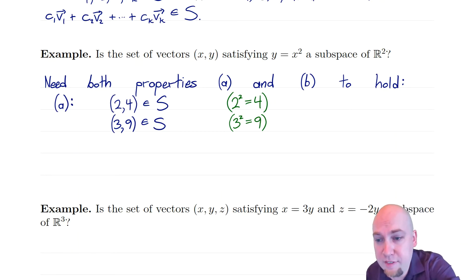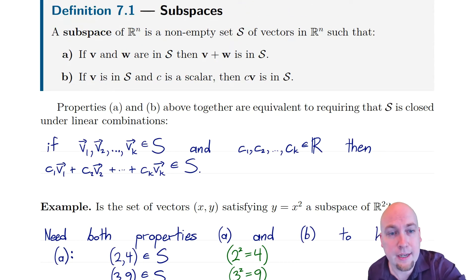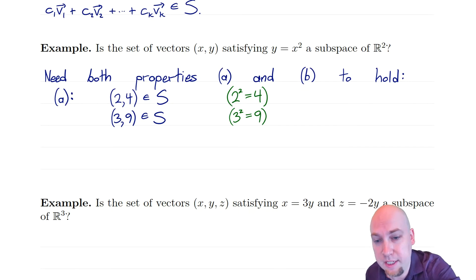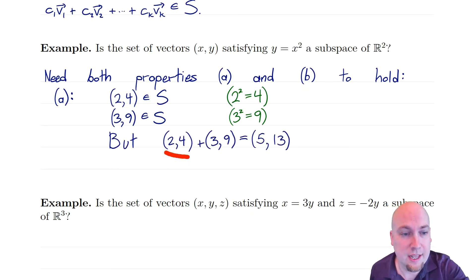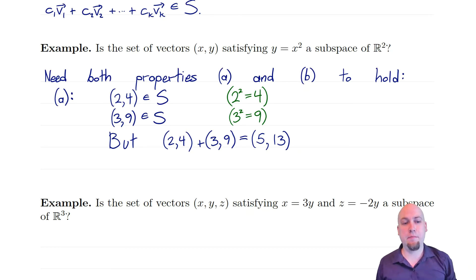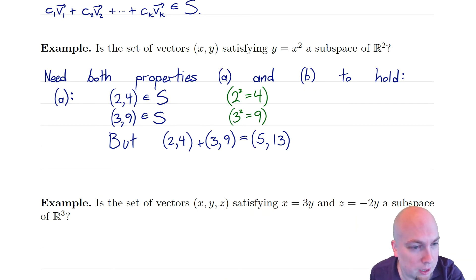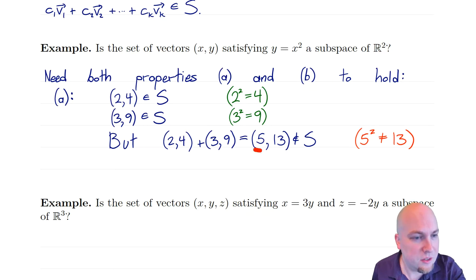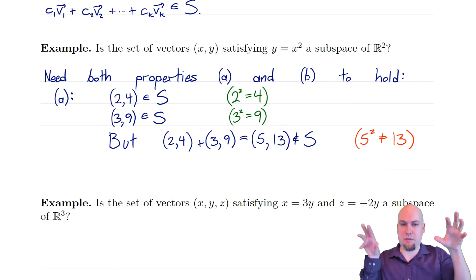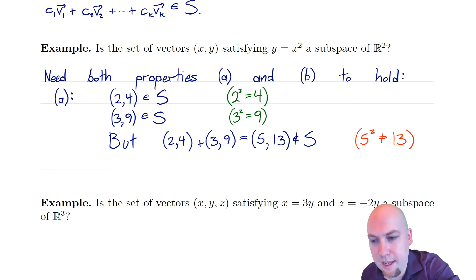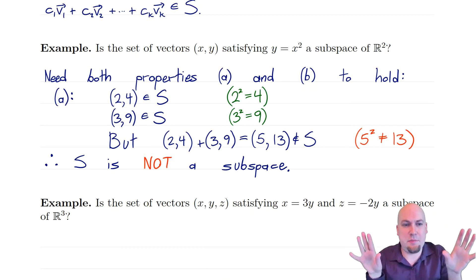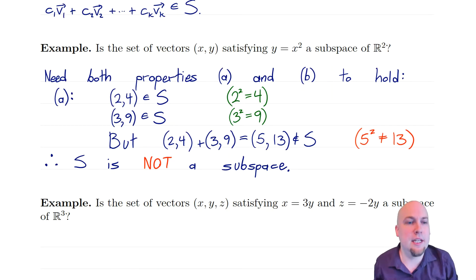So (5, 13) is not in the set S. We've found two vectors in S whose sum is not in S. Therefore, this is not a subspace. It's a fine set of vectors, but it doesn't have the extra properties that make it a nice linear algebra set. This is analogous to linear transformations — not all functions are linear transformations; similarly, not all sets are subspaces.